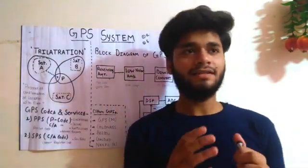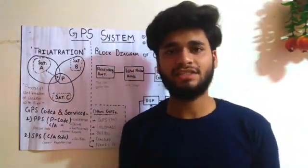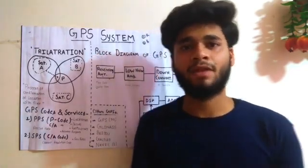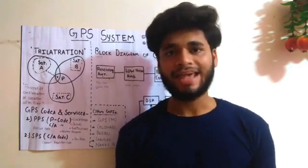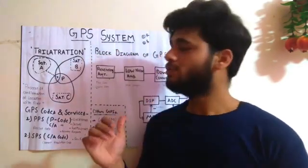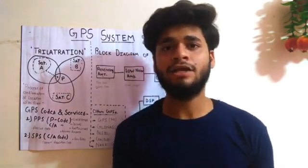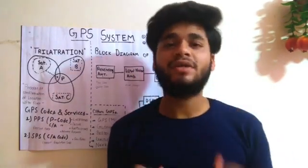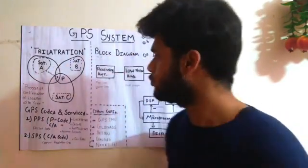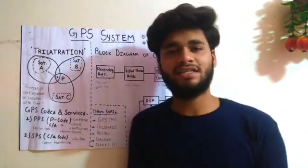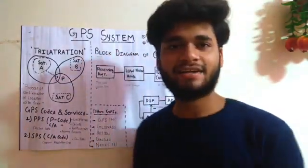Trilateration is the process of confirming the location of the user with time. Time is also a concern for location determination. For time, the GPS system uses atomic clocks, which are extremely high-accuracy timekeeping devices. Their accuracy is so high that they are used in this system. Time together with location gives us the complete information about the position of a user. This is the complete process of trilateration.